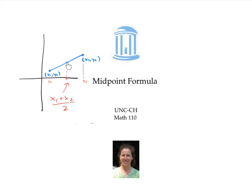Similarly, the y-coordinate of the midpoint is going to be exactly halfway between the y-coordinates of the endpoints. So the y-coordinate of the midpoint is the average of those y-coordinates.